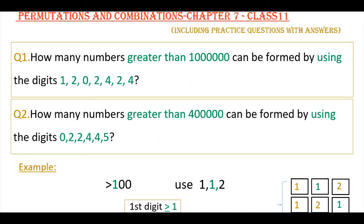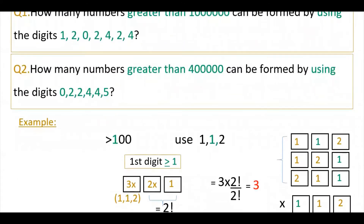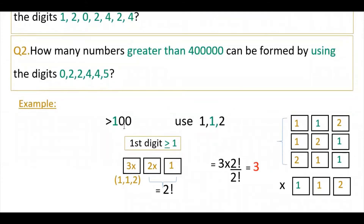Before solving these types of problems, I am going to explain with a small example. You have to find the required numbers which are greater than 100 by using the digits 1, 1, 2. The required number should be greater than 100, so the first digit should be greater than or equal to 1. Looking at the digits 1, 1, 2, you can use all three since all are greater than or equal to 1. So in the first box you can write any of these three digits — that is 3 ways.